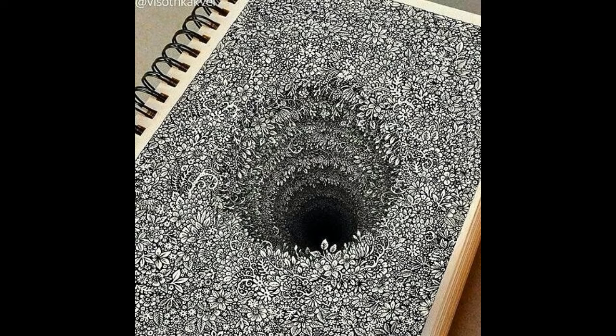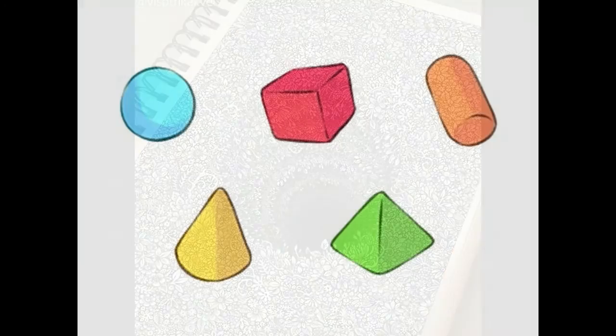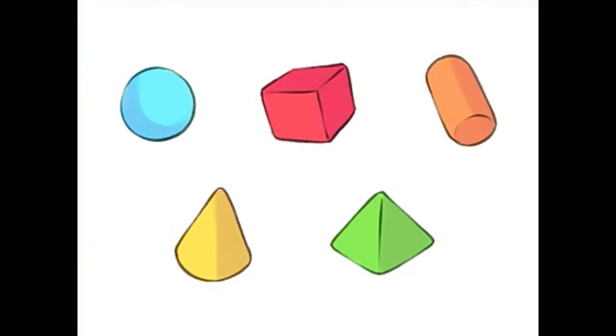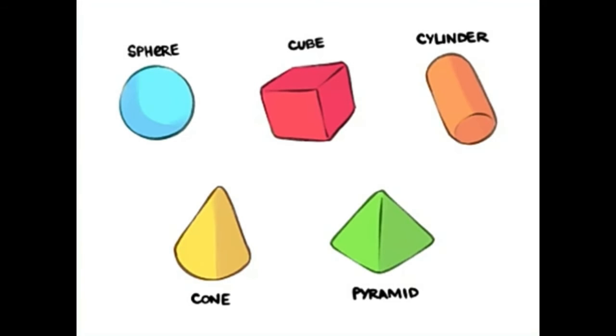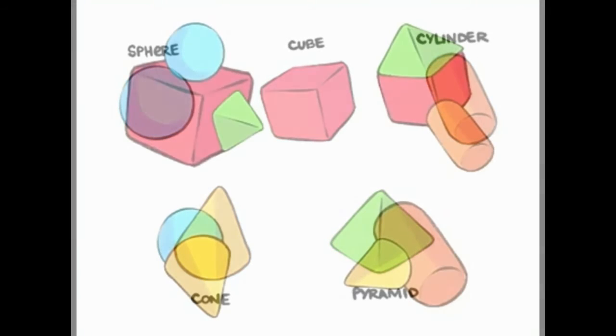This is what I call the Big Five forms: the sphere, the cube, the cylinder, the cone, and the pyramid. Think of these shapes as clay which can be morphed into different shapes. These five things can be used to draw whatever you want.